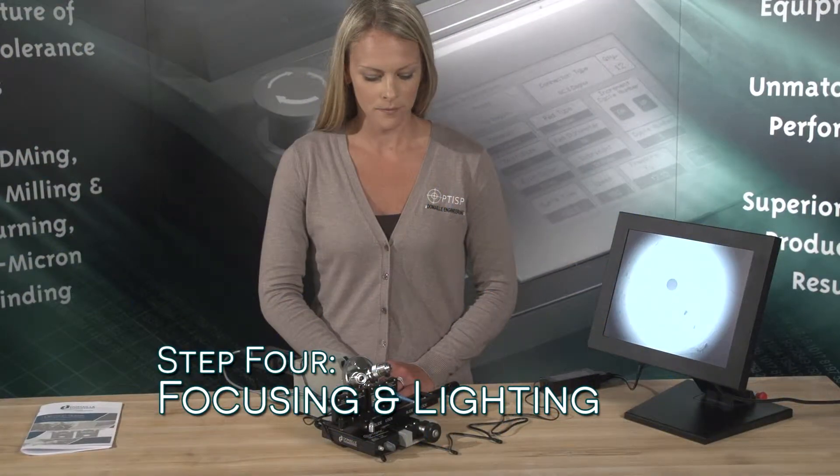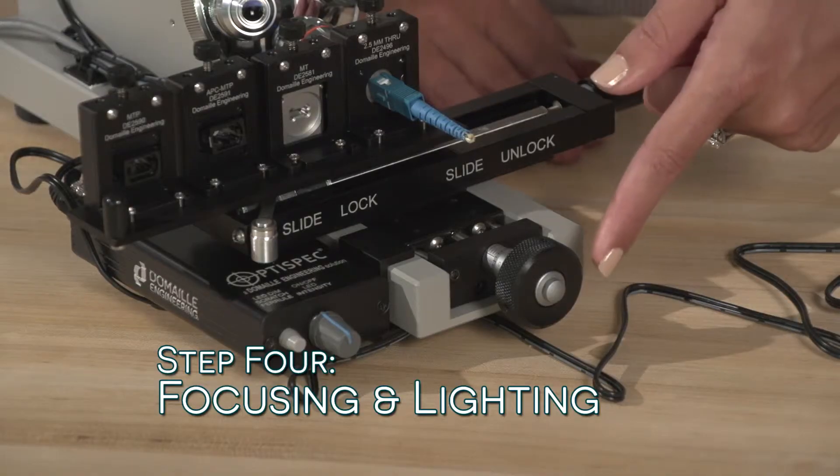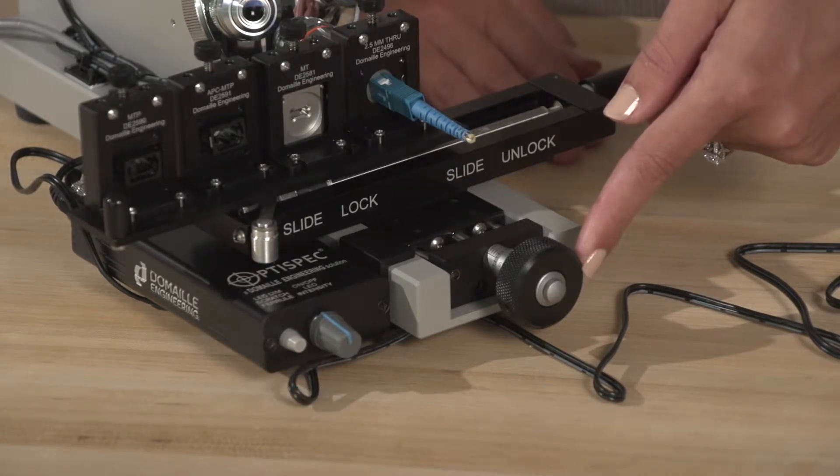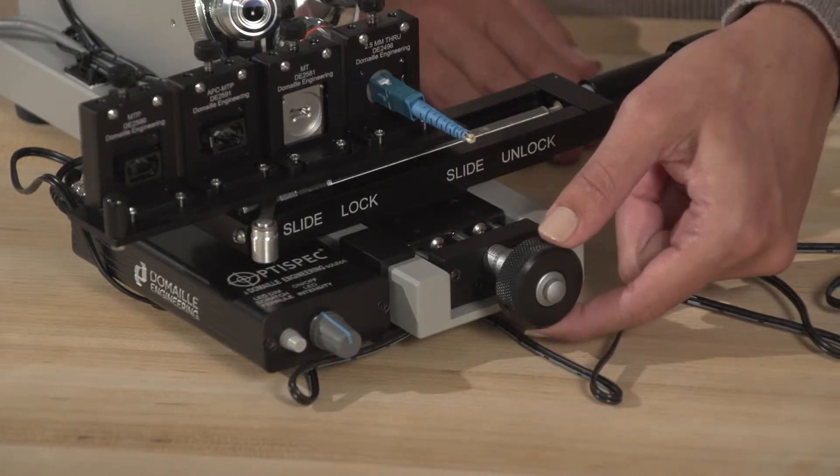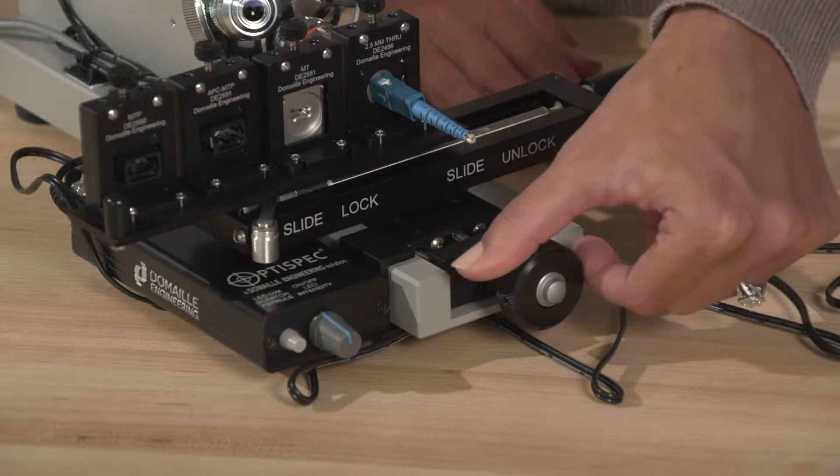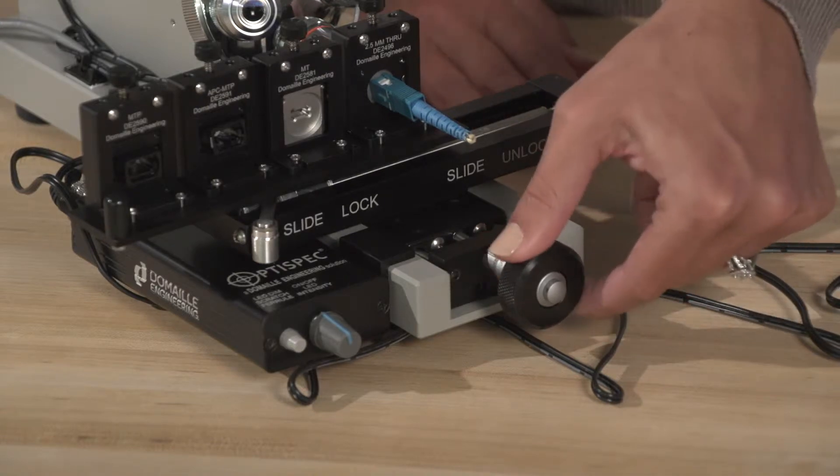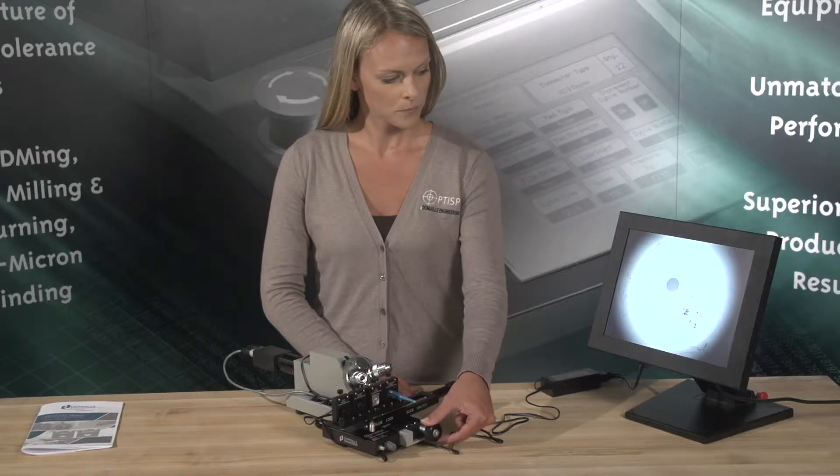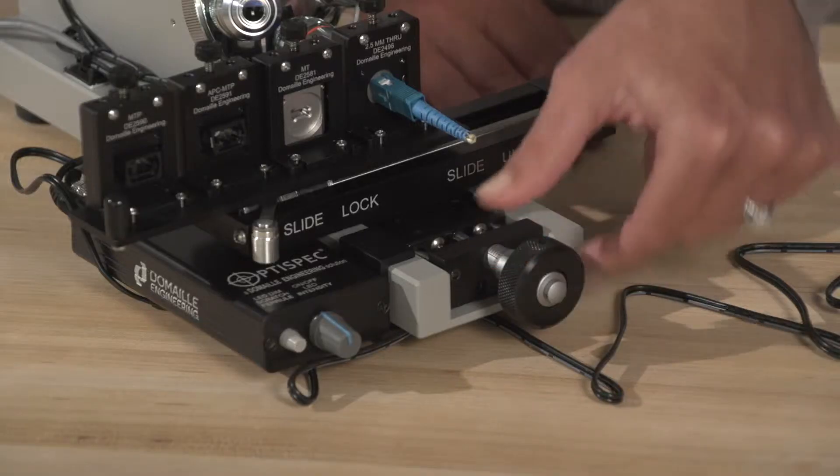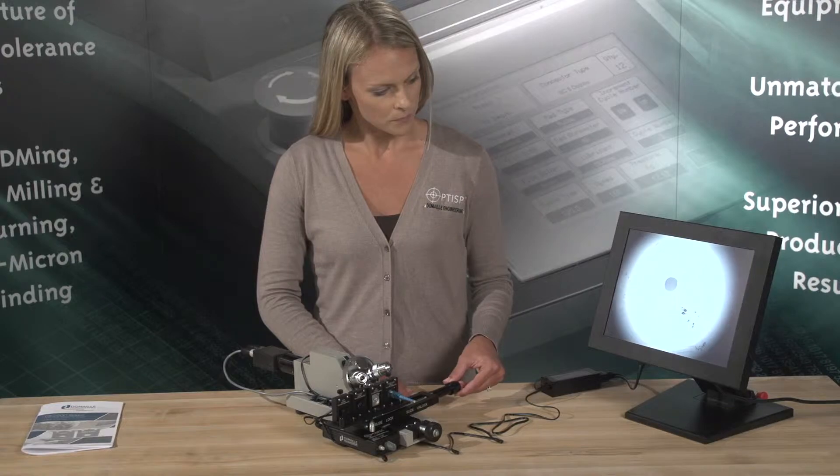Step 4: Focusing and Lighting. The focus adjustment knob on the DE2503 is located in front of the stage. After the beam has been positioned, turn the focus knob to adjust the focus of the image with precision and control. Once focused, center the image on the monitor as desired.